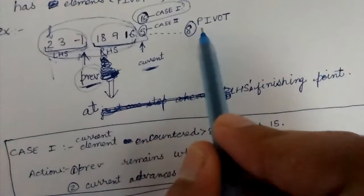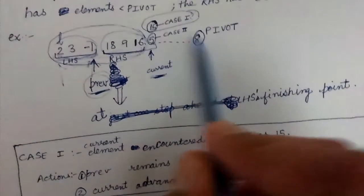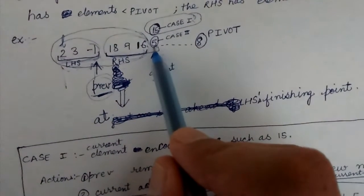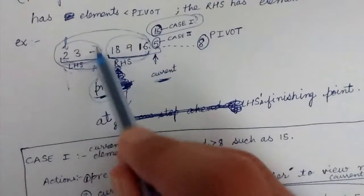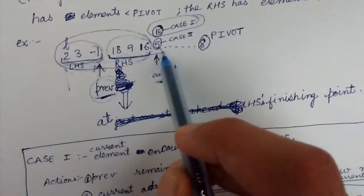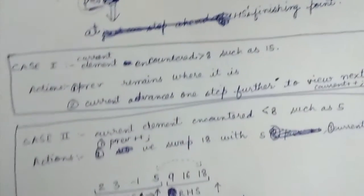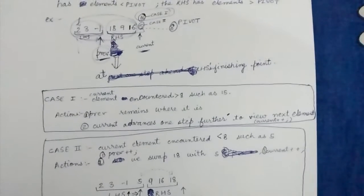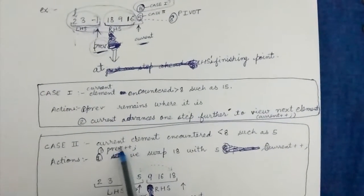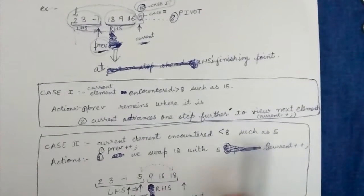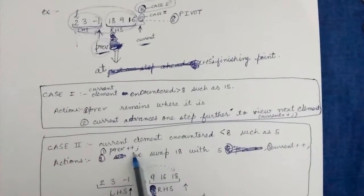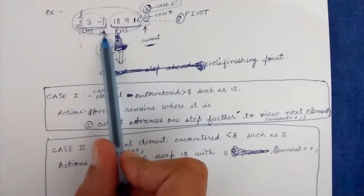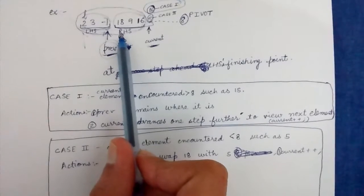Case 2 is a bit more involved. If we encounter an element which is less than the pivot element — for example, 5 — then 5 should be part of LHS. We somehow want to bring this 5 into the LHS. The current element encountered is less than 8, such as 5. The first step is prev plus plus, which increments prev.